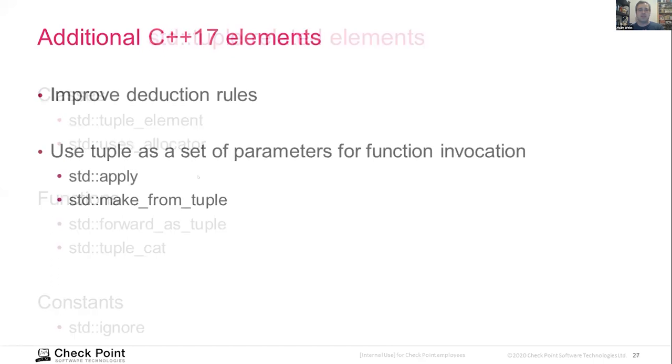C++17 did include some really interesting additions. There are some improvements to the deduction rules. That's, to my opinion, not the most interesting part, but one of the things that as a Python developer, you know, you can do with the tuple is to invoke functions because parameters to functions are basically an ordered set of different types of elements, which is what a tuple does. And in C++17, we have that ability added to the standard template library. std::apply takes a callable object and calls it with the tuple of elements. This is very useful if you want to, for example, create a more generalized callback mechanism. And std::make_from_tuple does the same with the constructors.